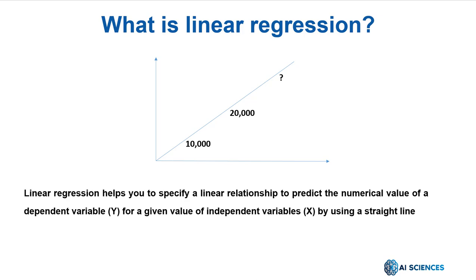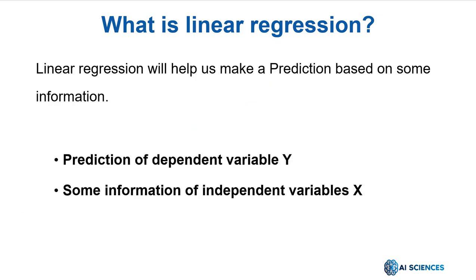We make predictions all the time, and most of them follow the logic of linear regression. Linear regression is a machine learning model which was designed to help you specify a linear relationship to predict the numerical value of a dependent variable, we will call it y in this course, for a given value of independent variables, we will call them x, by using a straight line called the regression line. Does that sound complicated? It's not. I'll show you.